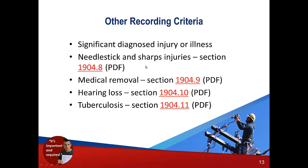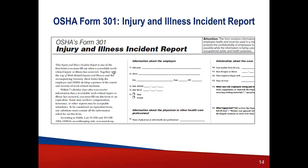There are other reporting criteria to be aware of. In healthcare settings, needle sticks and sharps injuries do not require the individual's name on the log due to privacy protections — you don't know if the blood is infectious, so the name is omitted. Hearing loss is recordable if there is a 25-decibel standard threshold shift. Tuberculosis is another special case where the name may also be omitted. You can read all of this in the standard and in the documents posted for the course.